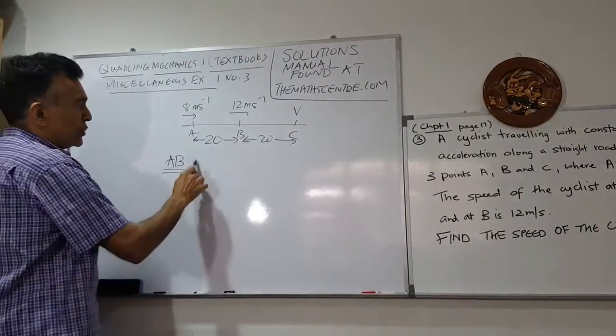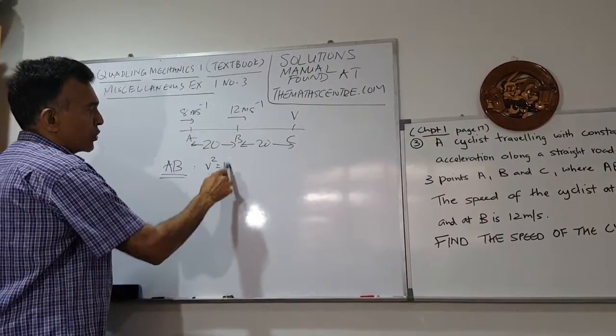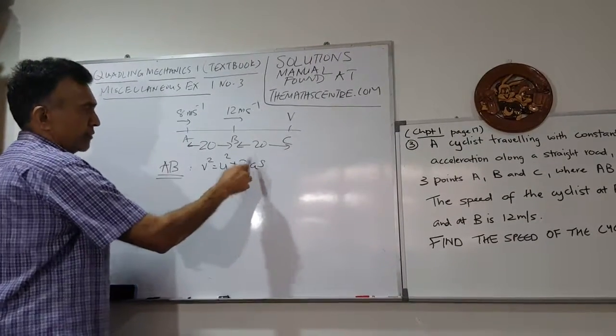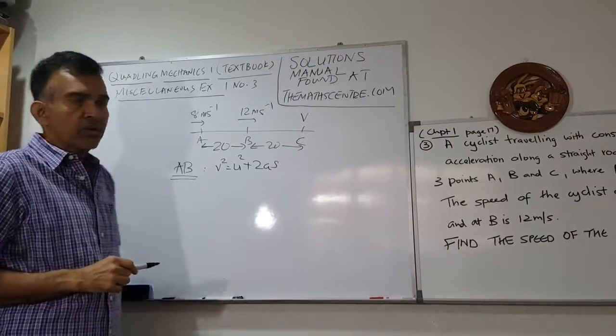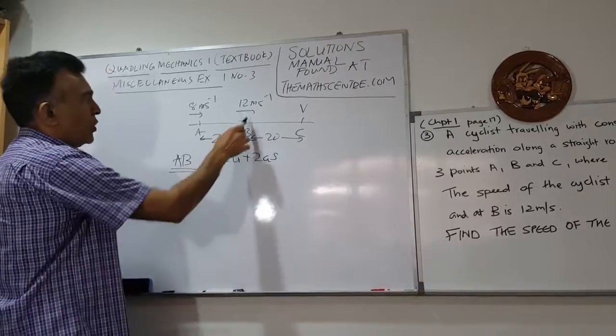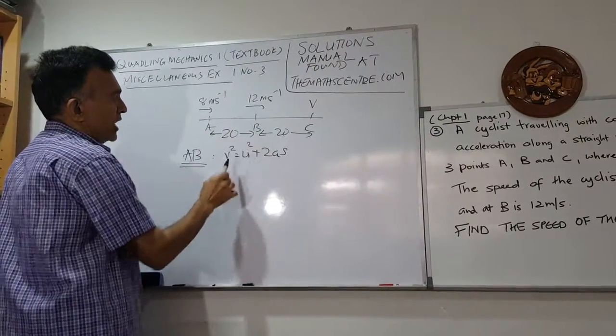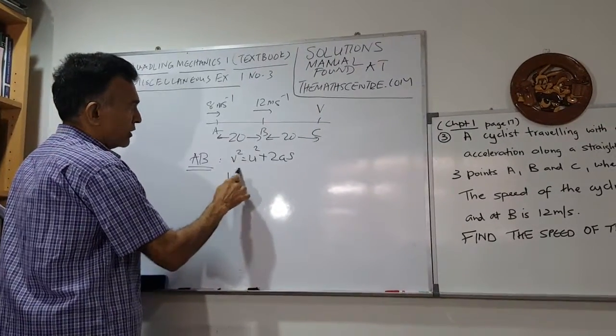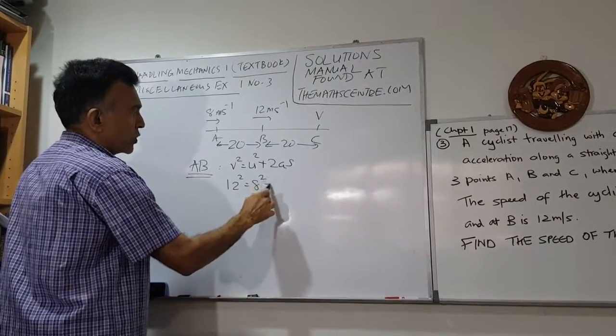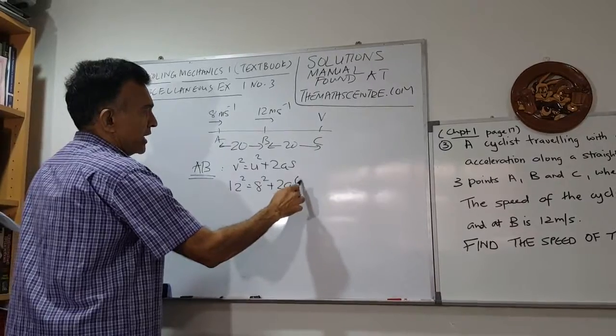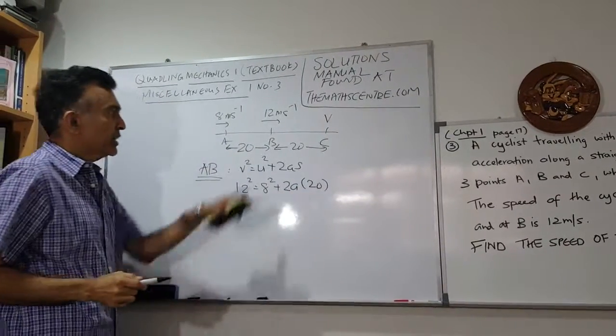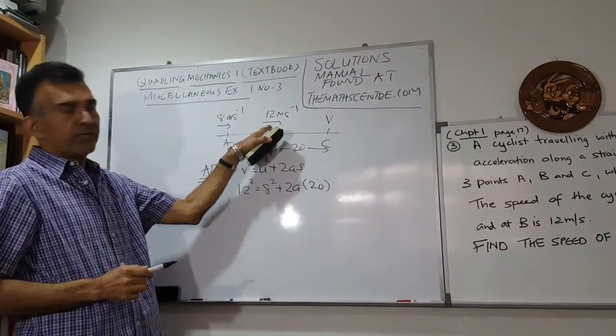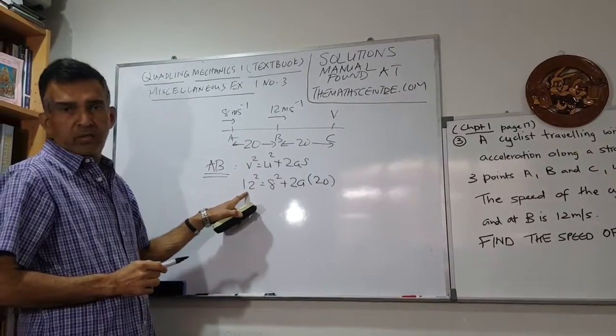Let's use v² = u² + 2as, one of the constant acceleration formulas. The final velocity at B - considering AB - we have 12² = 8² + 2a(20). The velocity here is 12, so v² is 12².